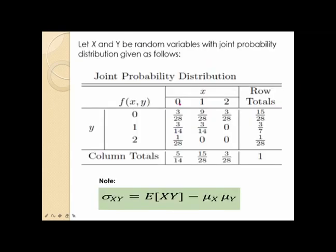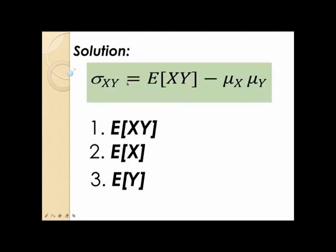Let's have this example. Let x and y be random variables with joint probability distribution given by this table. We are to find the covariance of x and y. In this solution, we'll be using the computational formula: sigma x, y is equal to the expected value of xy minus mu of x times mu of y.